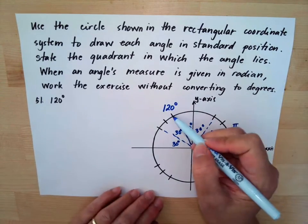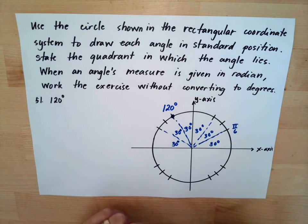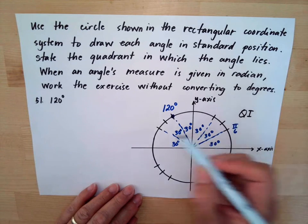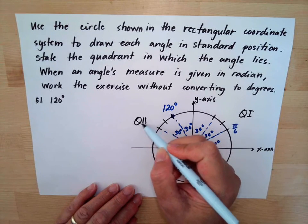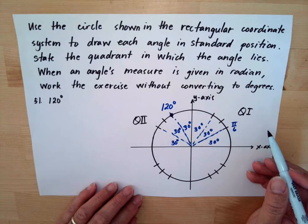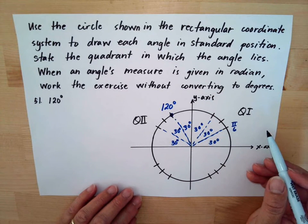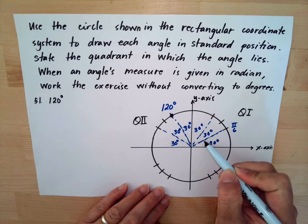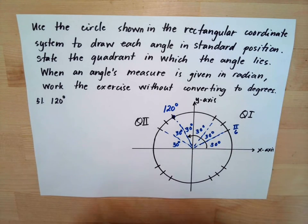This is your quadrant one, your quadrant two. So your 120 degrees is in quadrant two. This is our answer for this. Your angle goes from this point to that point.